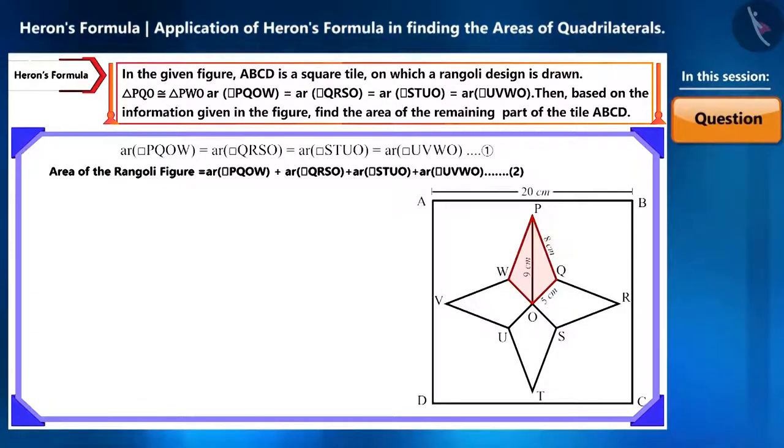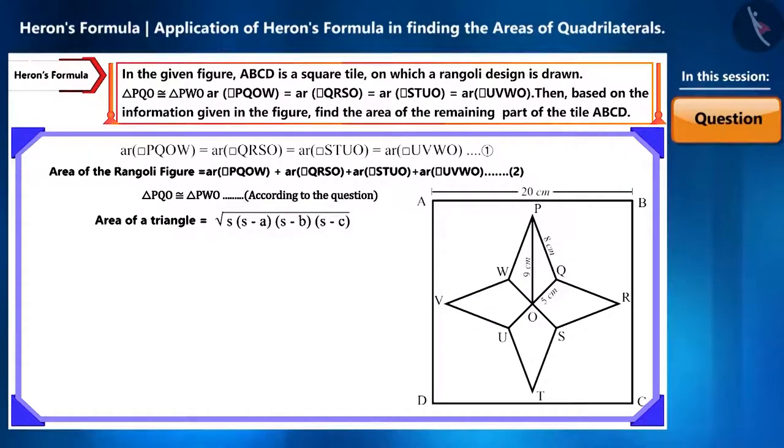Now look at the quadrilateral PQOW carefully. Here there are two triangles, triangle PQO and triangle PWO. According to the question, these triangles are congruent. In the figure, the length of all three sides of this triangle is given. Here we can use Heron's formula to find the area of this triangle.